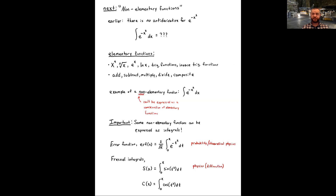There are other functions expressed as integrals that you might encounter in physics optics — specifically the Fresnel integrals, related to Fresnel diffraction. These are defined as integrals of sine of t squared and cosine of t squared respectively, denoted S(x) and C(x). Like e to the negative t squared, sine of t squared and cosine of t squared don't have elementary antiderivatives, so these Fresnel integrals are essentially as best as we can write those functions down.